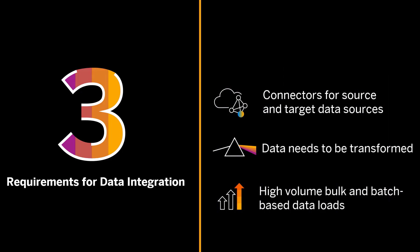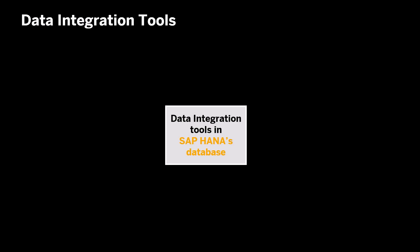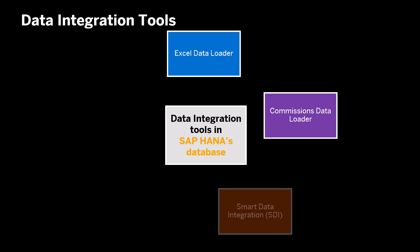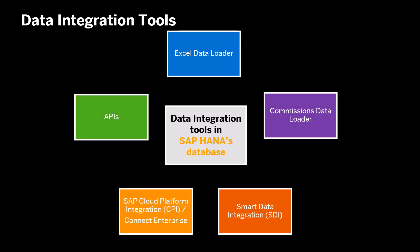Now we're going to compare five different data integration tools available with SAP Commission's application on SAP HANA database: Excel Data Loader, Commission's Data Loader, Smart Data Integration or SDI, SAP Cloud Platform Integration or CPI, and Connect Enterprise, and Application Programming Interface commonly known as APIs. I'll discuss the various characteristics with which to compare these solutions. Through this comparison, you can identify some typical use cases based on data volumes and frequency to help you choose the appropriate tool to use based on the data integration requirements.